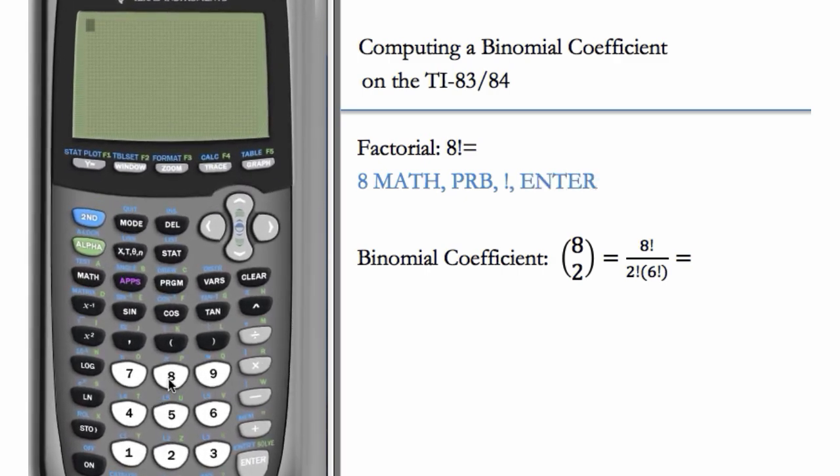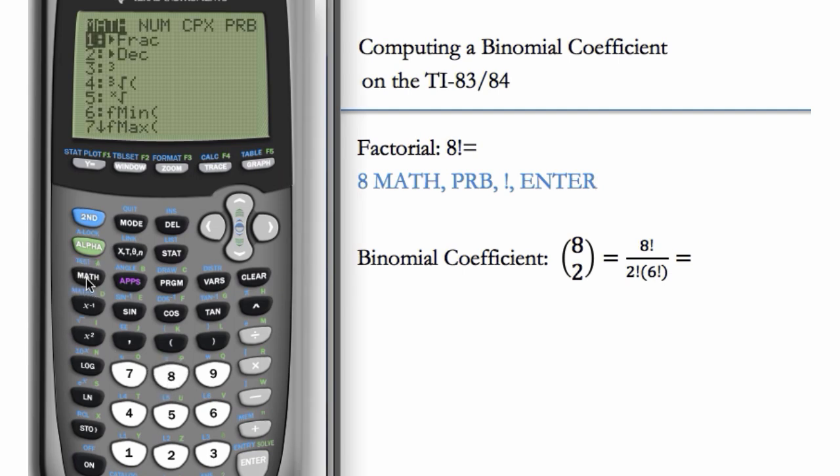So we'll first enter the number we want to find the factorial of, 8, then choose MATH along the left, hit the right arrow to get to PRB along the top, and choose the one that corresponds to factorial, which is number 4. Then hit enter, and there's our result.